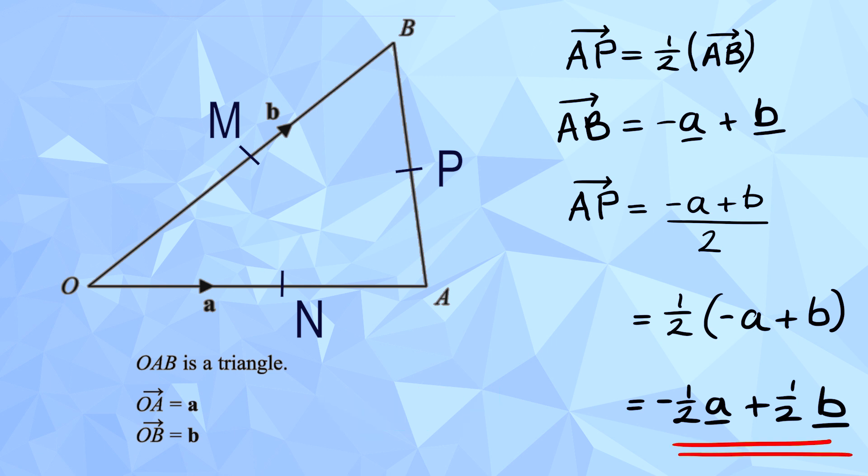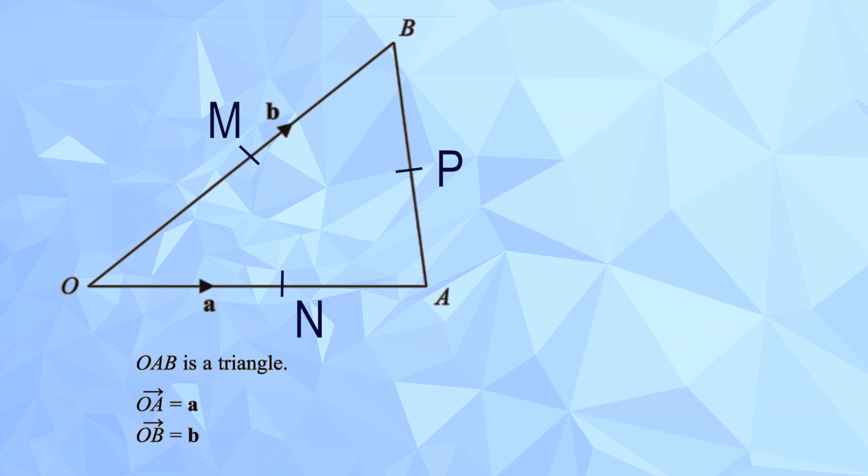Well, what if we were asked to describe the vector OP? Well, to go from O to P, you could go from O to A, and then from A to P. And we would write that like this. Now, we know that O to A, we just call that vector a. And from A to P, well, we just worked that out. It was negative half a add half b. So, if we put that together, we've got a add negative half a add half b.